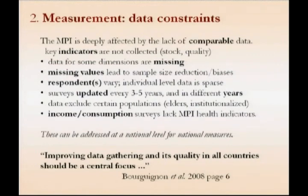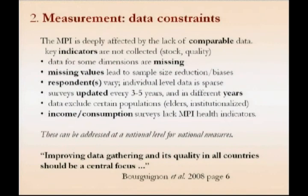The surveys also exclude certain populations. For example, women are interviewed in DHS up to the age of 49, but not over that age. Or, as with all household surveys, certain institutionalized populations are excluded. A very common question is why we do not include income or consumption. Unfortunately, the surveys that we have do not have that data, except for the WHS, which has a very abbreviated and probably not very accurate module.